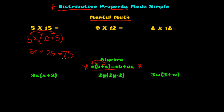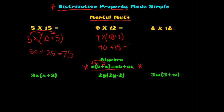So 5 times 15 is 75. Let's try it with 9 times 12. 12 is a combination of 10 plus 2. So in your head you think: 9 times 10 is 90, and 9 times 2 is 18. 90 plus 18 is 108.